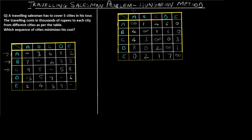For step 2: the first column's minimum is 0, so it remains unchanged. The second column's minimum is also 0, so again unchanged. For column 3, the minimum is 1, so: 4−1=3, 1−1=0, 2−1=1, 1−1=0. Columns 4 and 5 both have a minimum of 0, so they remain unchanged as well.